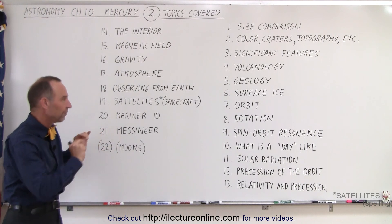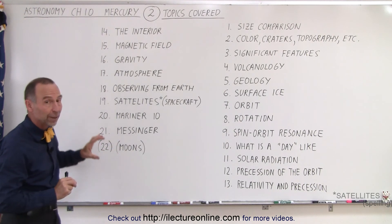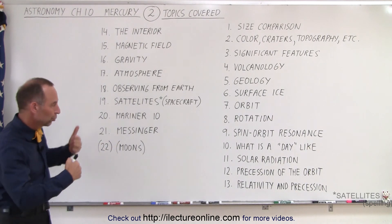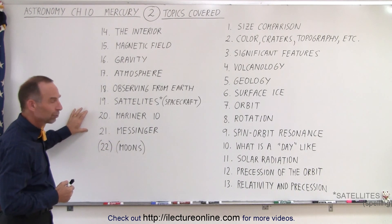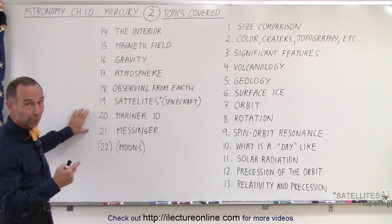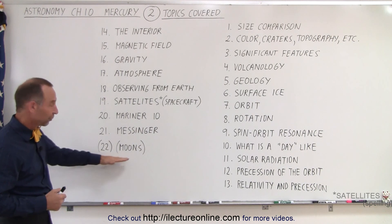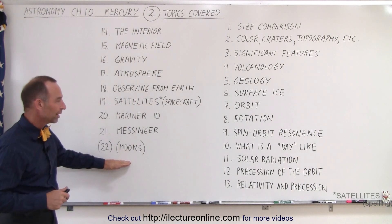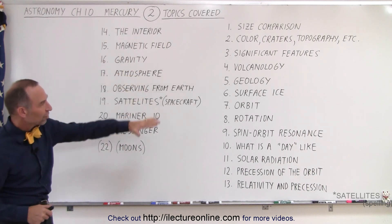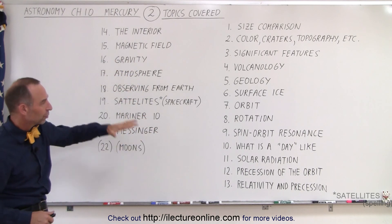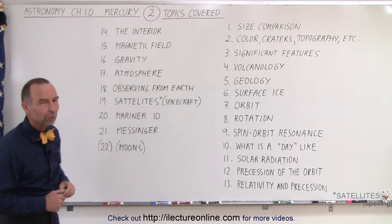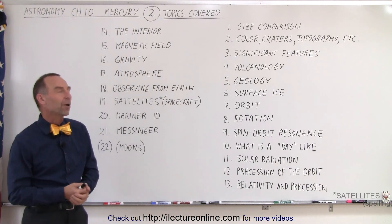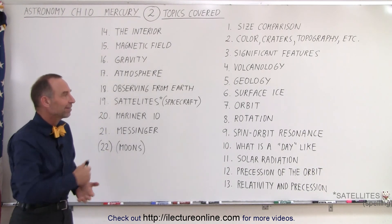Now there's going to be some specifics, of course — like here we're going to talk about specific satellites that we send to Mercury to observe the planet, which of course are not the same ones we send to other planets. And of course we don't have any moons on Mercury; there's no moons at all, while others do have moons. But the general topics that we're going to talk about Mercury will be roughly the same for all planets in that same order.